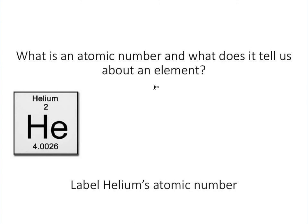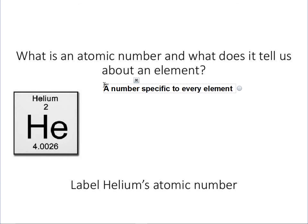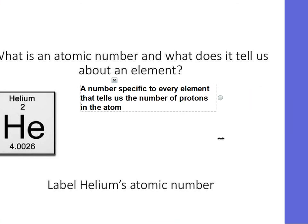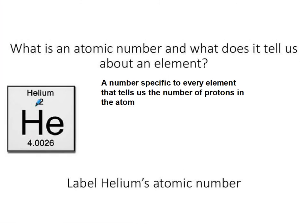The next one says: what is an atomic number and what does it tell us about an element? An atomic number is a number that's specific to every element that tells us how many protons the element has. Helium's atomic number would be two.